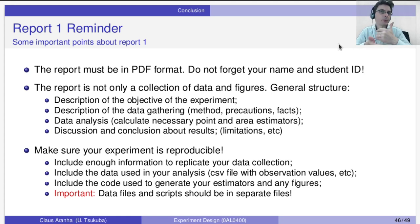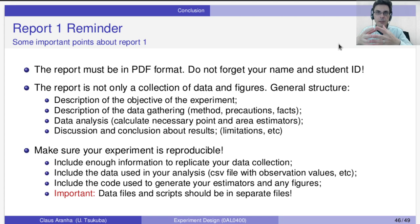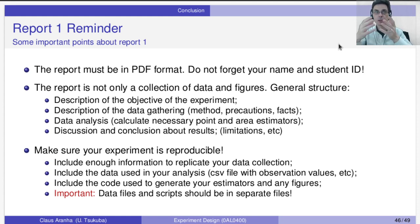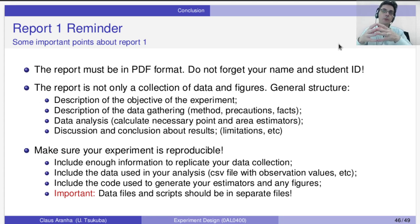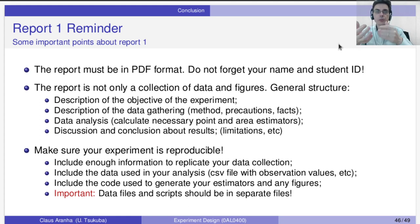First, describe the objective of your experiment — I want to do an experiment to understand something, or to show something. Then describe how you gathered the data: What kind of data are you gathering? Did you have to run a program, pick up rocks on the beach, look for data in papers, or get data from the newspaper or internet? Describe what kind of data you gathered. Also describe, if necessary, what you did to make sure the data collection was fair — for example, running two methods on the same computer, or collecting samples always at the same time.